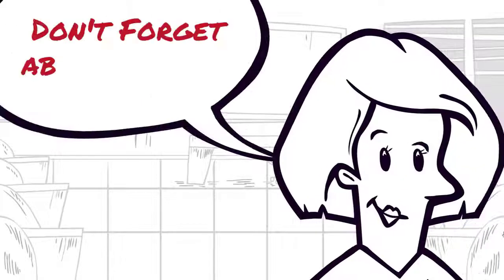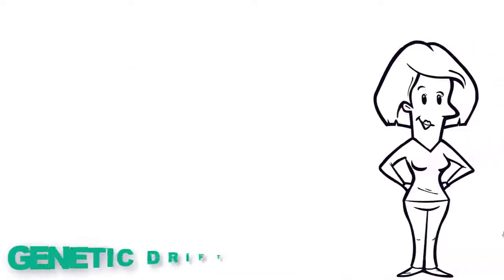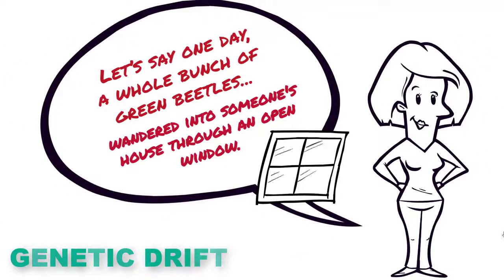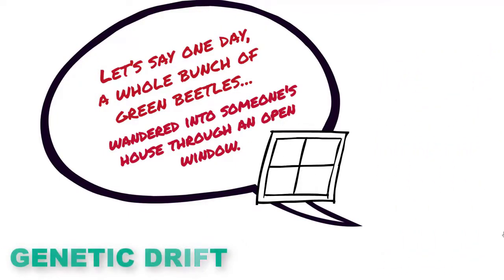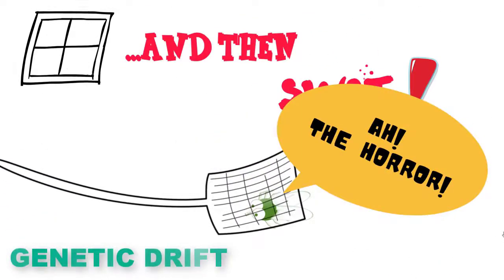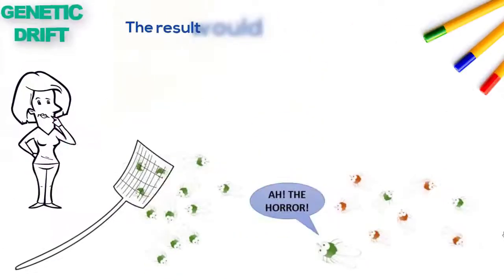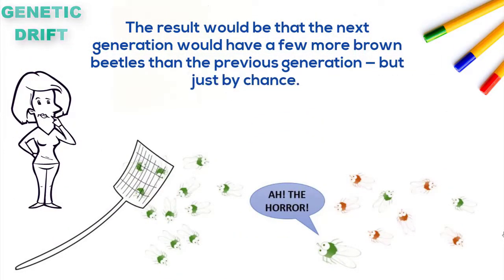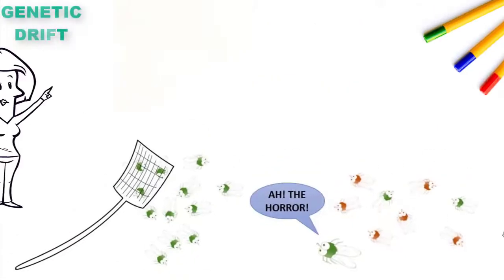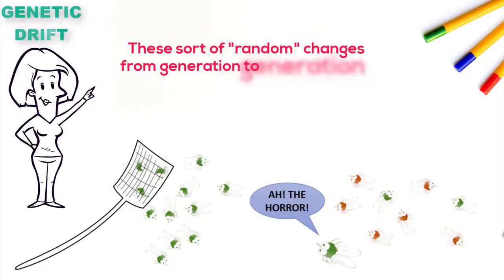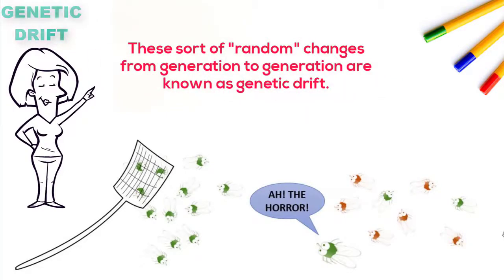Don't forget about genetic drift. Let's say one day a whole bunch of green beetles wandered into someone's house through an open window. And then — splat! The result would be that the next generation would have a few more brown beetles than the previous generation, just by chance. These sort of random changes, from generation to generation, are known as genetic drift.